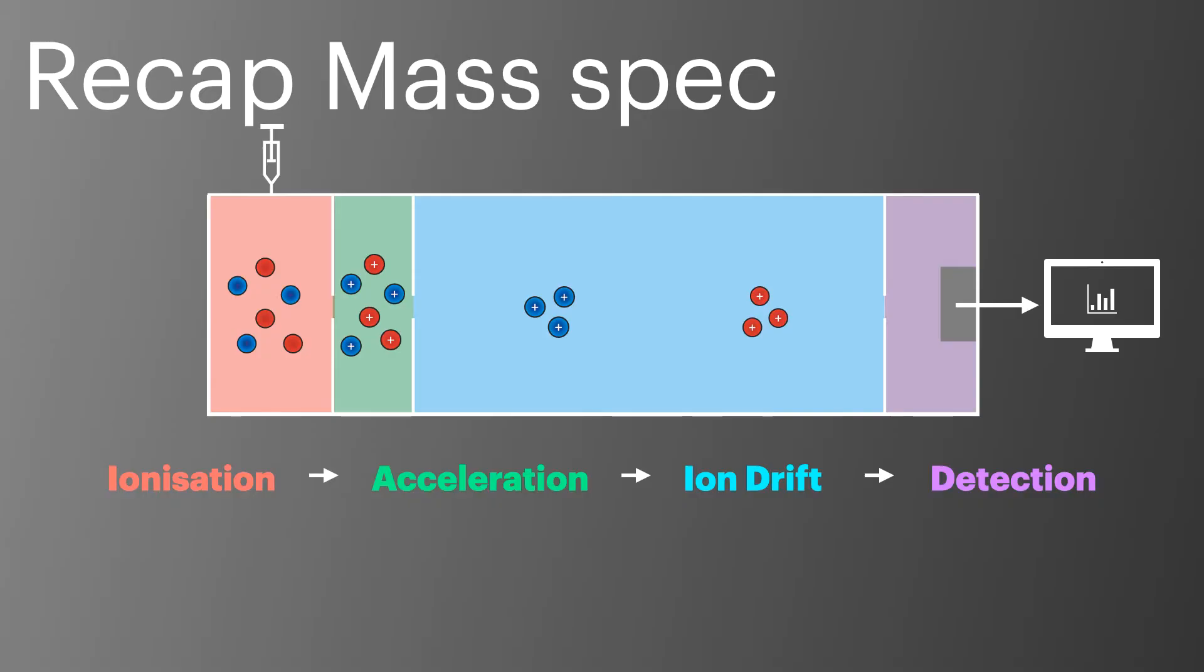Let's start by taking a quick recap of the mass spectrometer. Atoms are added to the mass spectrometer and ionized. These ions are then accelerated before traveling down the flight tube to arrive at the detector. It's important that you can describe each stage and how it works. The most important thing to the calculations we're looking at today is the kinetic energy and the distance of the ion drift or the flight tube. These are constants or fixed values and don't change even when considering different ions or isotopes.